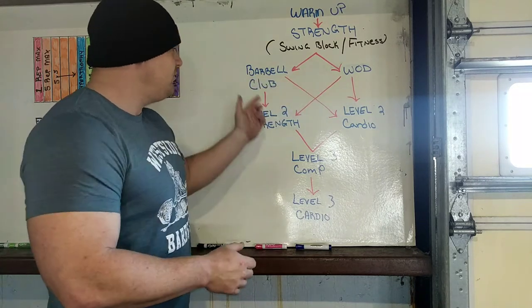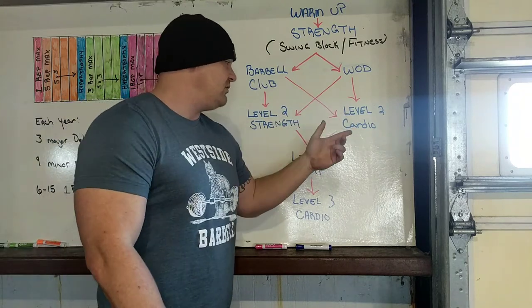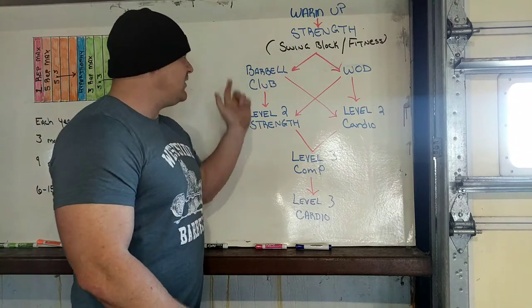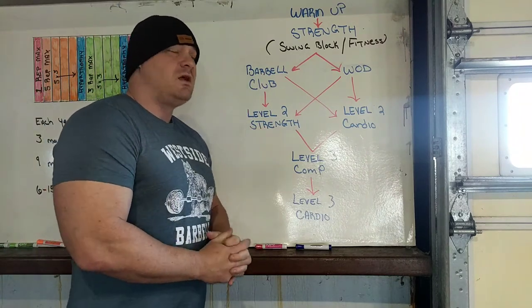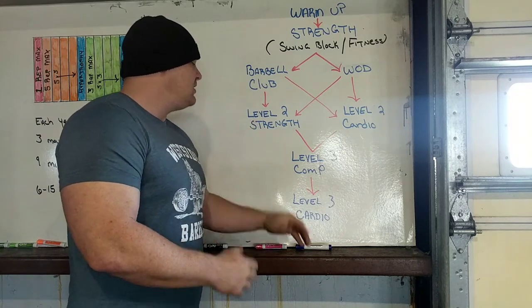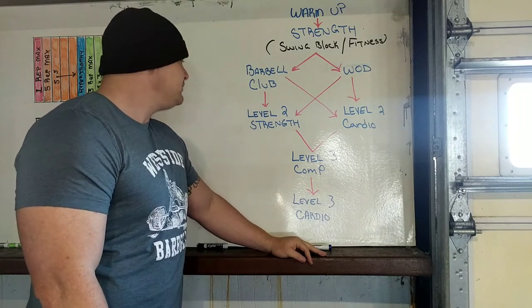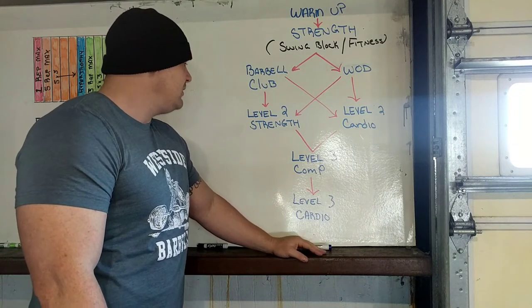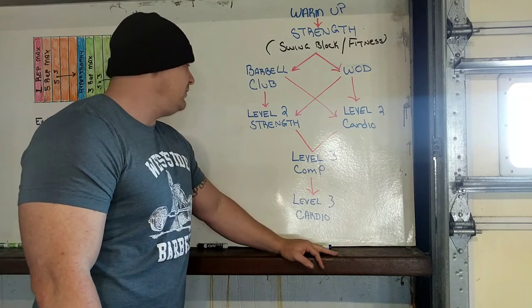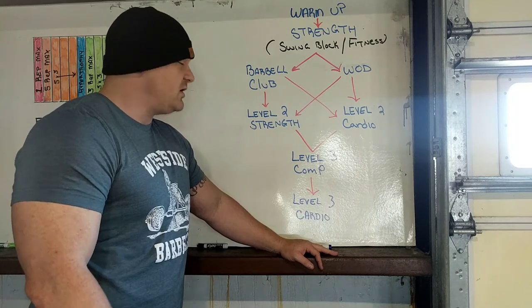Once that's over they can move on to our optionals which we call level two strength, level two cardio. Level two strength is always an accessory for the barbell club. So if we're working on our bench press, the accessory work is probably going to be some very high rep arm stuff or upper back stuff. The level two strength is always a high rep movement that way we're pushing lots of blood through the joints that we just used, through the muscles.